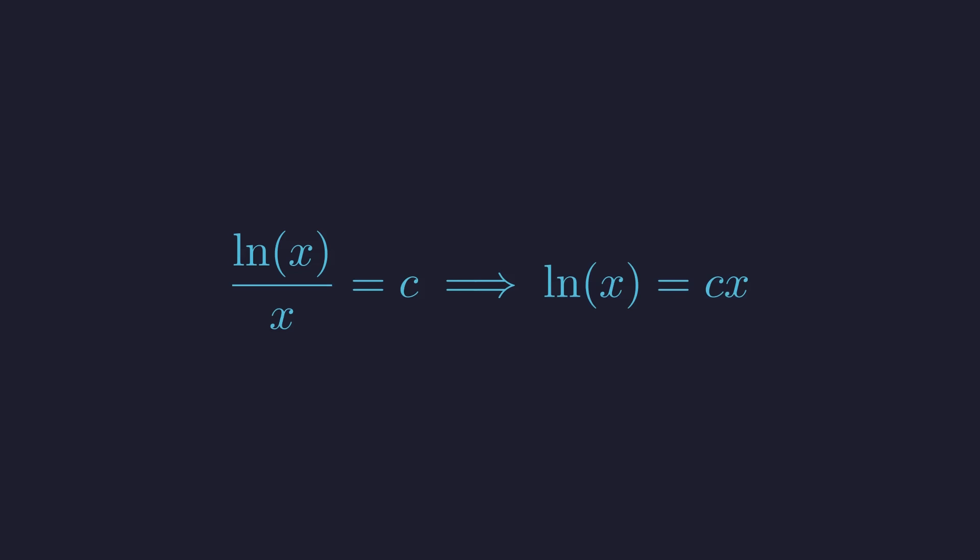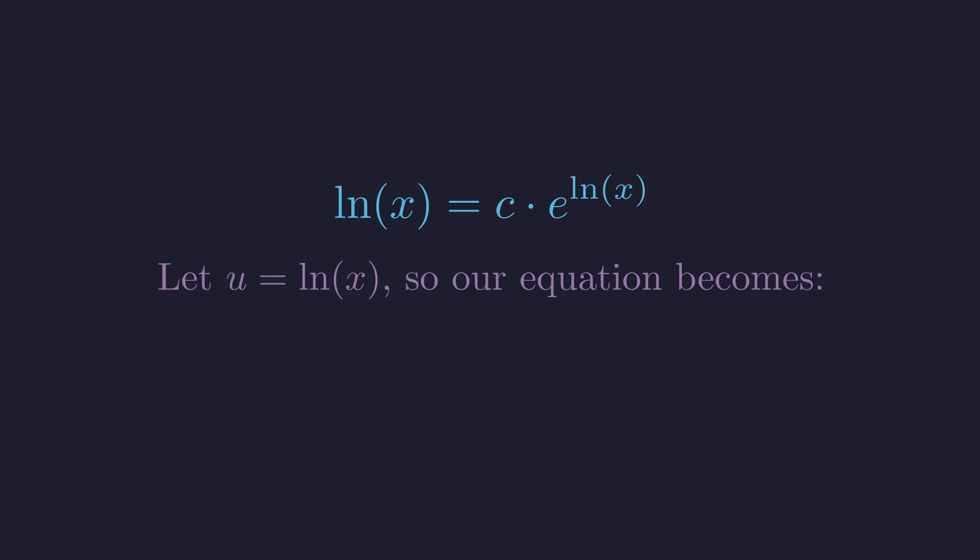Starting from our equation, we multiply both sides by x to get the natural log of x equals c times x. To get this into Lambert W form, we need x to appear as e to some power. We'll rewrite x using the fact that x equals e to the natural log of x. Since x equals e to the natural log of x, we can substitute this on the right side. Now let's make the substitution u equals the natural log of x to simplify the notation.